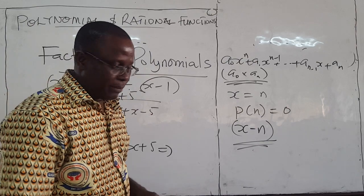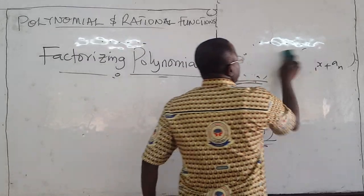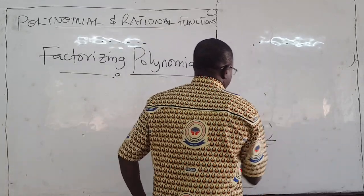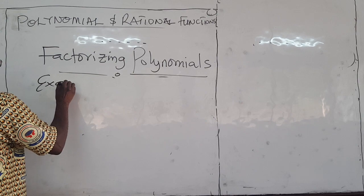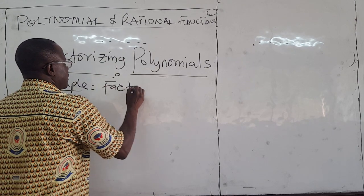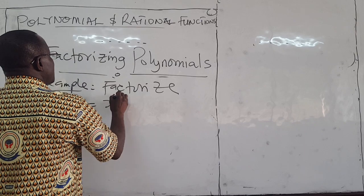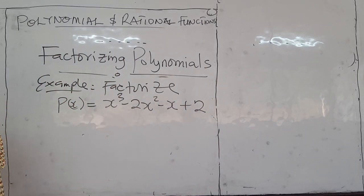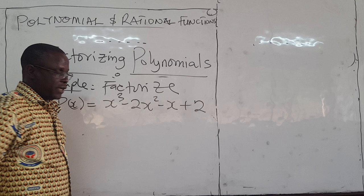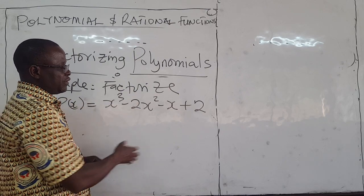Let's use an example to illustrate this. Suppose you want to factorize the polynomial x cubed minus 2x squared minus x plus 2. What do you do first? Take the constant term. If there's no constant term, it's easy — pull out an x and try to factorize what's inside the bracket.